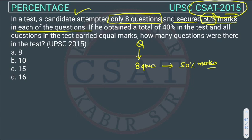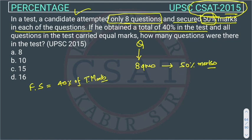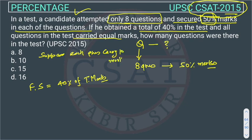If he obtained a total of 40 percent marks in the test, his final score is 40 percent of total marks. All questions in the test carry equal marks. We have to find Q — the total number of questions in the test.